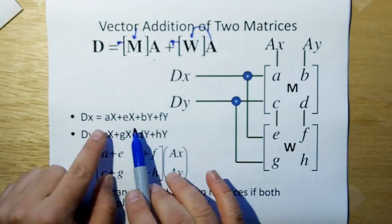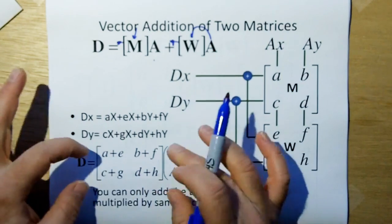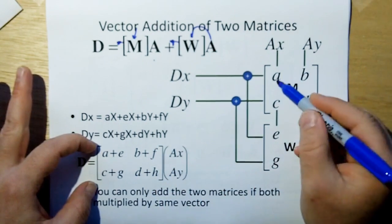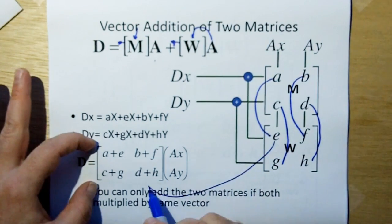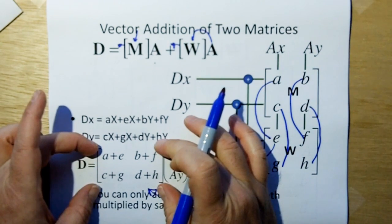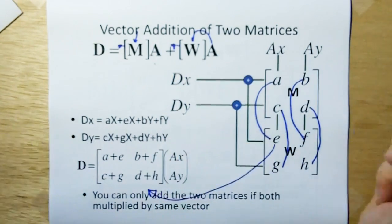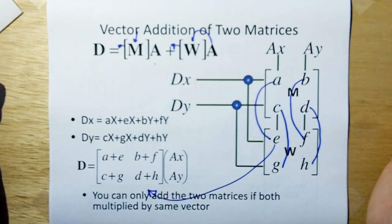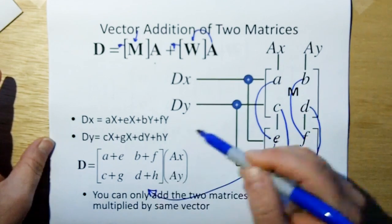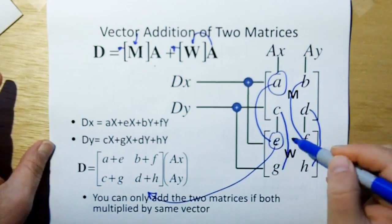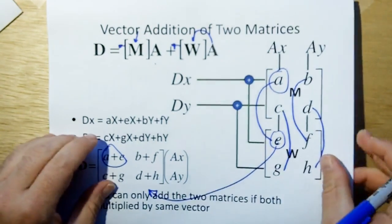Plus the E component, the E times the X component of A plus F times the Y component of A. What we're really doing here is adding the result vectors from the matrix operating on the vector A. But what we can do to simplify it is if we take these expressions we just got. If we take the X's and put them together, we get A and E. If we take the Y's and put them together, we get BF. Then we can actually, by summing the like components of each matrix, we can have the same effect if we just add the coefficients of the two matrices together.